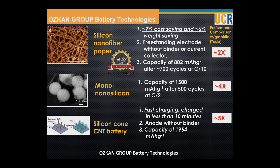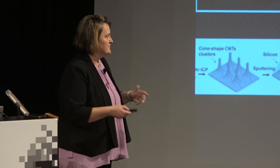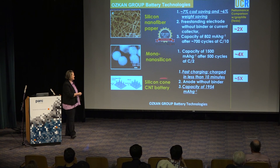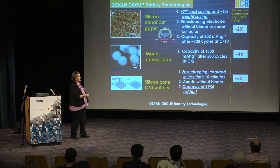Another technology we developed is the mono-nanosilicon anode, with performance about four times better than Tesla's graphite. Industry is asking: can you charge this in 10 minutes rather than waiting eight hours to charge your Tesla — and while doing that, not damaging the battery or killing your car? You want very, very stable chemistry. That's what we worked on and developed in the silicon cone CNT battery system, with great performance as well.